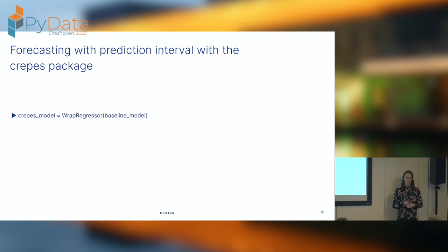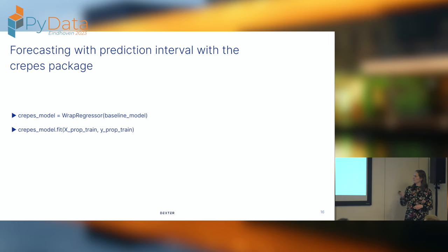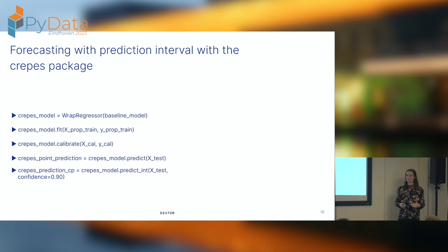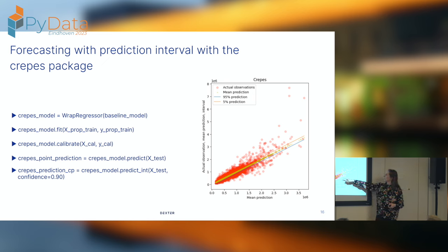How does this look in Python? It's not a big difference. Instead of your normal baseline model — which could be a LightGBM or regression model — you wrap it, fit it as you usually would using the proper training set (without the calibration set), then calibrate it as one extra step. Then you can predict both your value and the interval around it. The point prediction gives one value per sample; the interval gives two — the upper and lower bound. You'll see a constant prediction interval forecasted around your values.